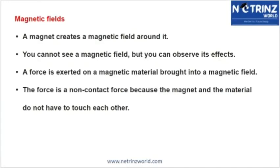Even a small magnet, or a piece broken from a bigger magnet, will always have two poles — a south pole and a north pole. Due to these poles, a field is generated around any magnet. This field, generated due to magnetic forces, is known as the magnetic field. You cannot see a magnetic field, but you can observe its effects.